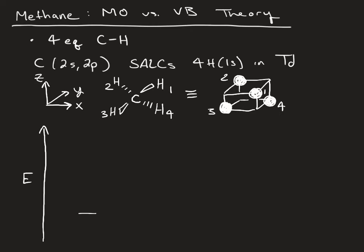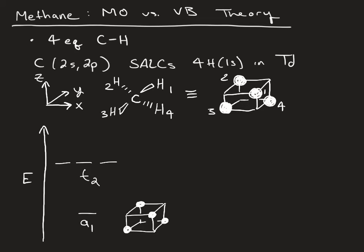Going through and writing out the SALCs, you would have an A1 type SALC and three degenerate SALCs that transform as T2. This A1 SALC has all of the orbitals in phase, and will overlap with the 2s atomic orbital on carbon, which also transforms as A1.